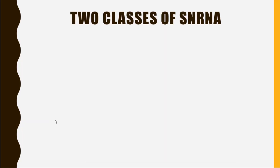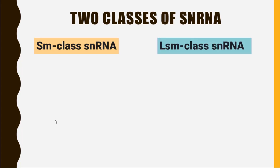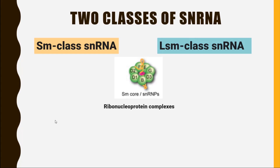There are two classes of snRNA: the Sm class snRNA and the LSM class snRNA. In both classes, Sm is basically a type of protein that surrounds itself to the snRNA and makes a complex called ribonucleoprotein complexes. In the Sm class snRNA, we have different types: U1, U2, U4 ATAC, and U5.